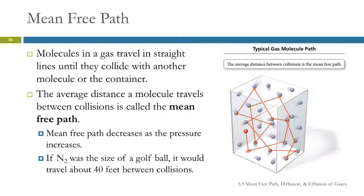Mean free path: molecules travel in straight lines until they run into something. The average distance a molecule travels before it runs into something is its mean free path. Mean and average mean the same thing. The mean free path decreases as the pressure increases.